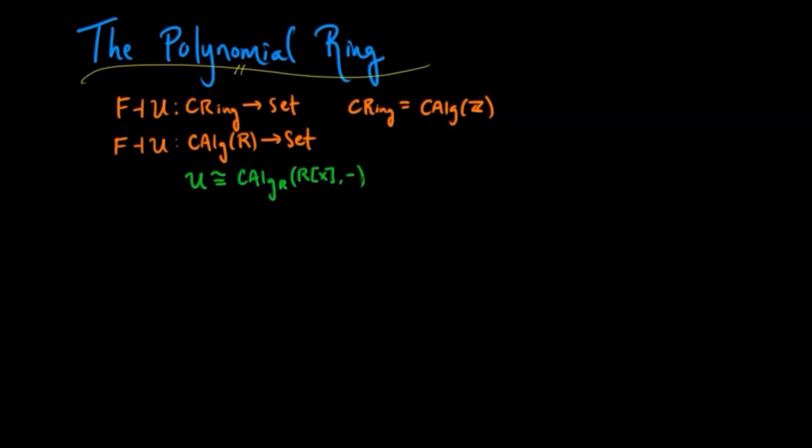The left adjoint, or sometimes known as co-adjoint F, will be given by this polynomial ring construction where the variables are given by the set on which the free functor is acting.